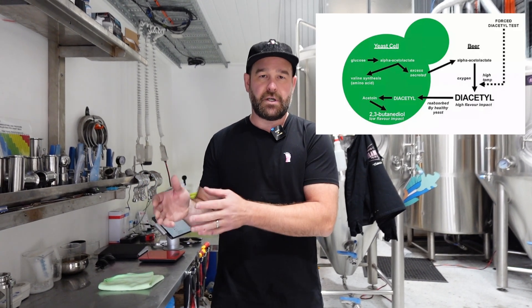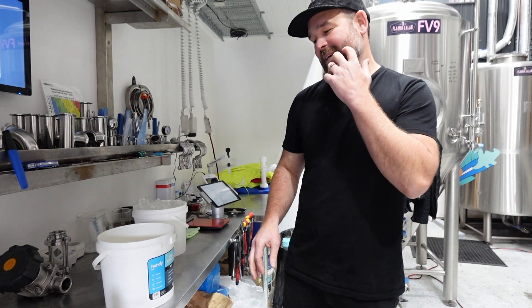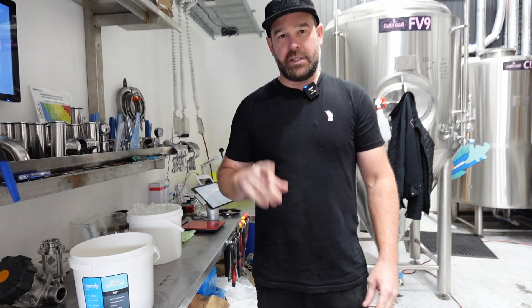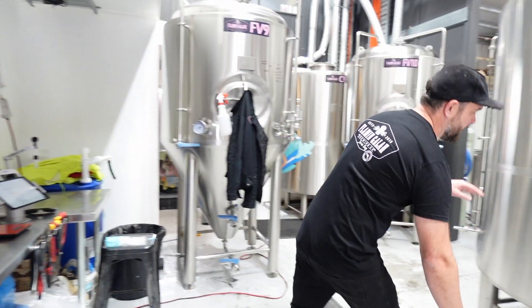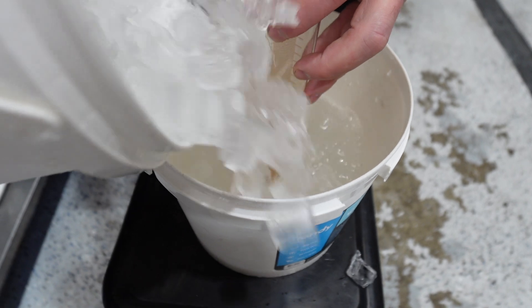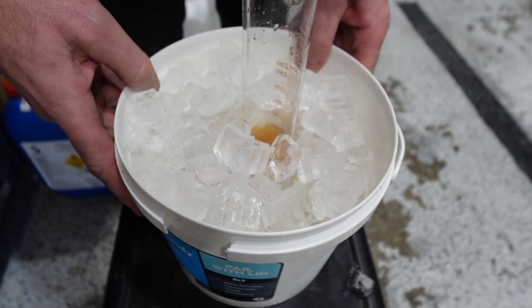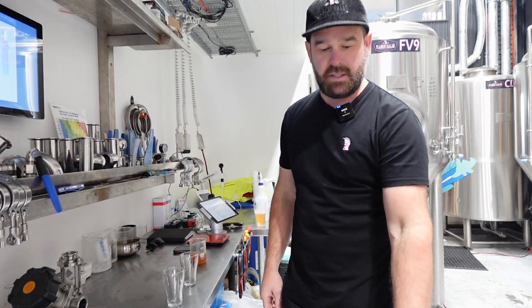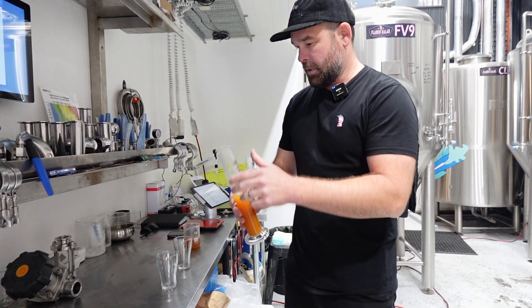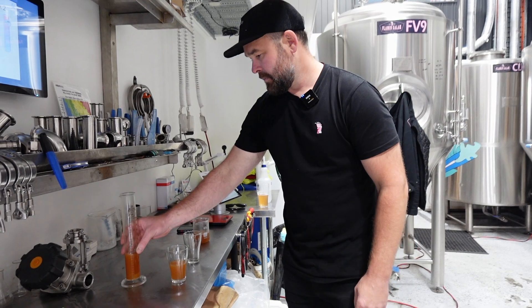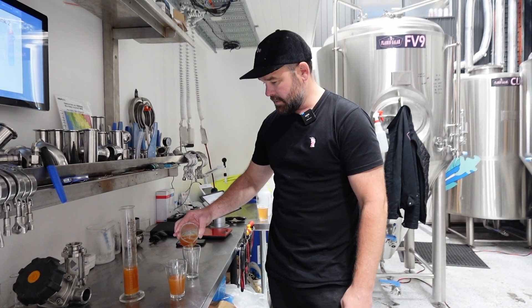To find out whether you've got diacetyl still in your beer: we've got ice and a little bit of cold water because we want to chill this sample as quickly as we can. Straight into the cold water, pack the ice around it, and throw it in the cool room to help a little bit more. We've chilled our forced diacetyl test down to roughly 4 degrees C. Pull that out and put it in a sample glass - and then we've got our control for the experiment in the other one.